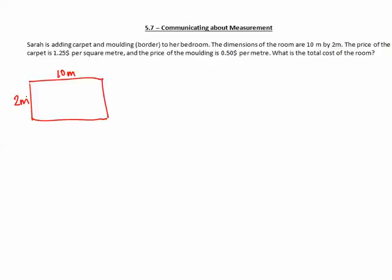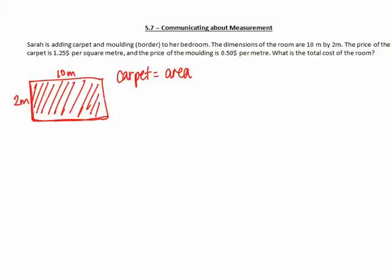First of all, we have to find the carpet or the border. We can look at two different things. The carpet is really the same as the area. The carpet will be the area of the room, whereas the border that goes around the room is the perimeter. So the border or the molding will be perimeter.